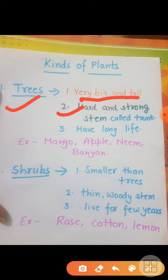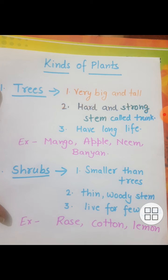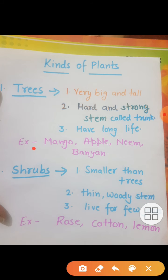Inka jo stem hota hai, jo tana hota hai, woh baut hard and strong hota hai, jis ko hum bolte hai trunk. Trees have a long life. For example: mango tree, apple tree, neem tree, and banyan tree. These are different types of trees.